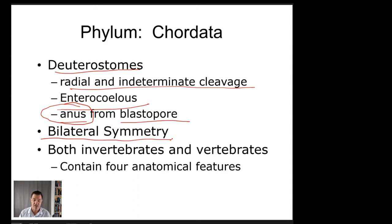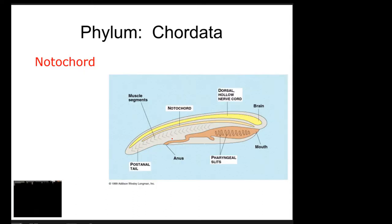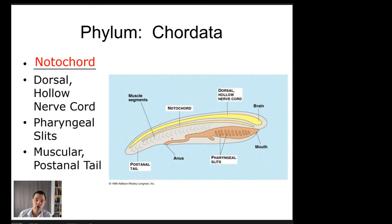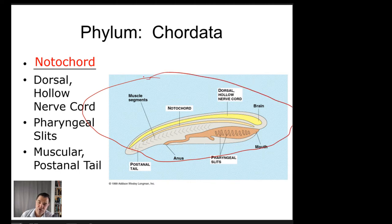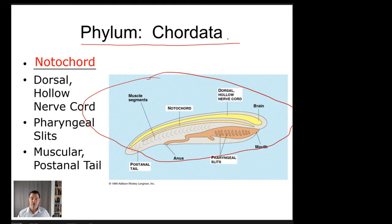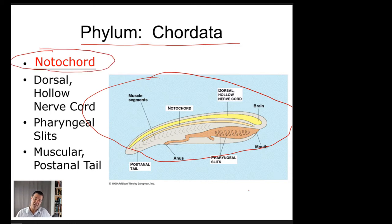All members of phylum Chordata share four characteristics. This primitive larval-stage organism illustrates that every chordate, at least during development, starts looking something like this tadpole-like form. The first characteristic is the notochord — a flexible rod that runs the length of the animal.